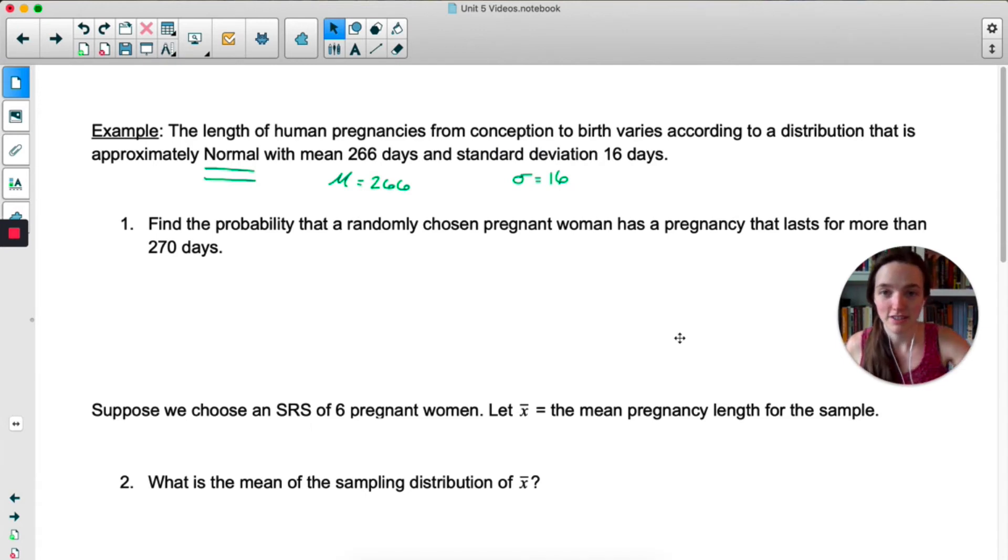Okay, find the probability that a randomly chosen woman, pregnant woman, has a pregnancy that lasts more than 270 days. We are dealing with one randomly selected person, which means we're not dealing with the sampling distribution. We are dealing with the population distribution. We are not taking a sample. We are selecting one random person from the entire population. So here's my population distribution. It's normal. They told me that. The mean is at 266. We want the probability that our one randomly selected woman has a pregnancy that is 270 days or more.